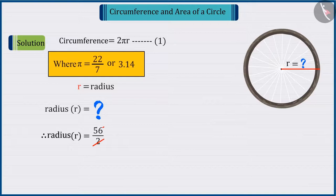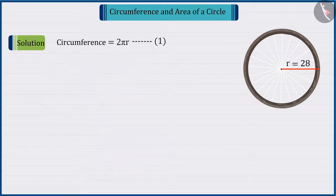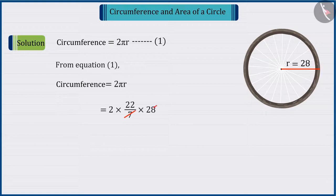Therefore, dividing the diameter of the wheel by 2 gives us 28 cm as the radius. By putting it in the circumference formula, we get the circumference of the wheel as 176 cm.